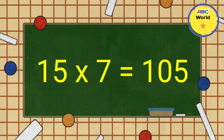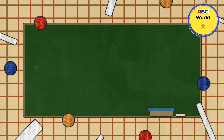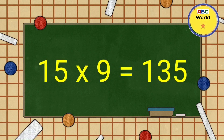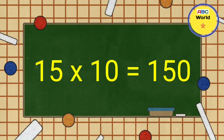Fifteen sevens are one hundred five. Fifteen eights are one hundred twenty. Fifteen nines are one hundred thirty five. Fifteen tens are one hundred fifty.